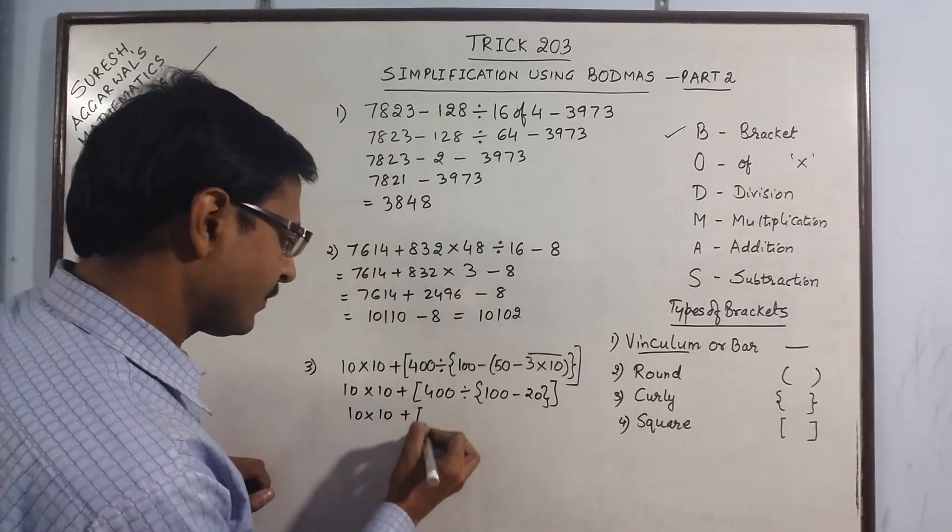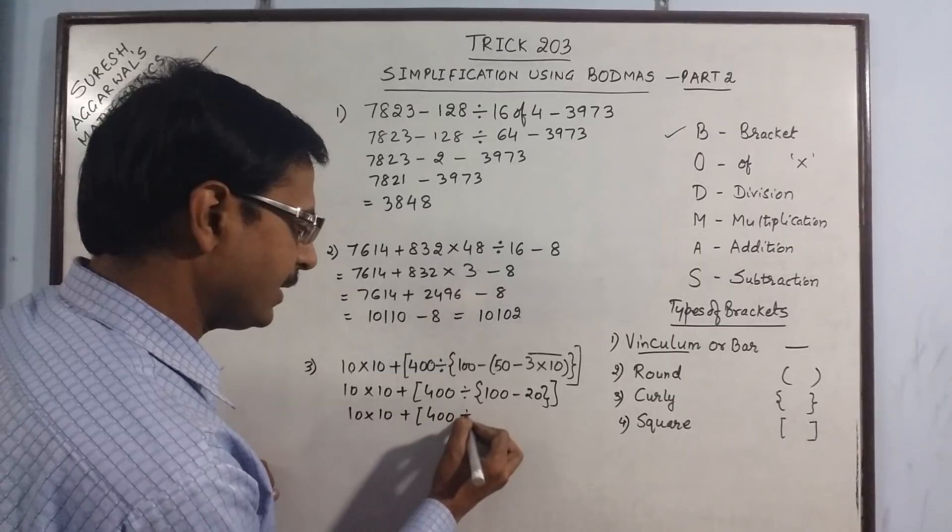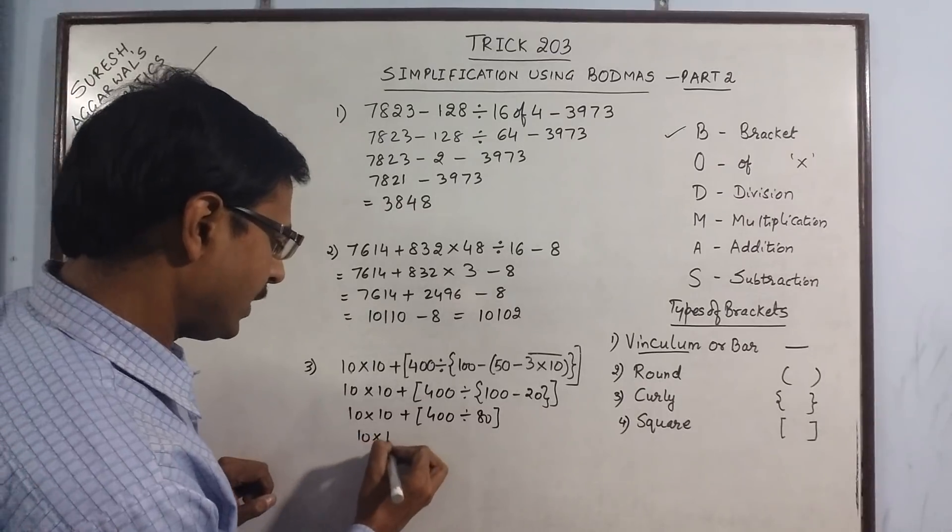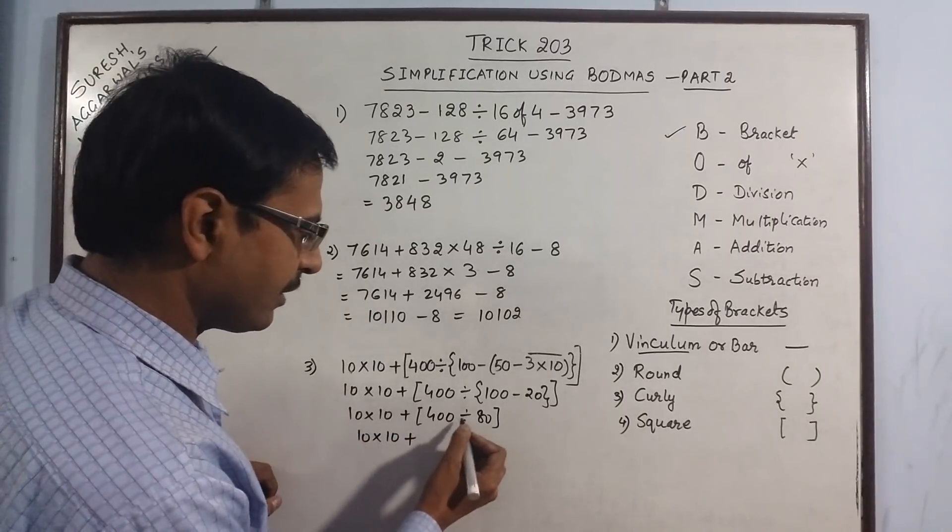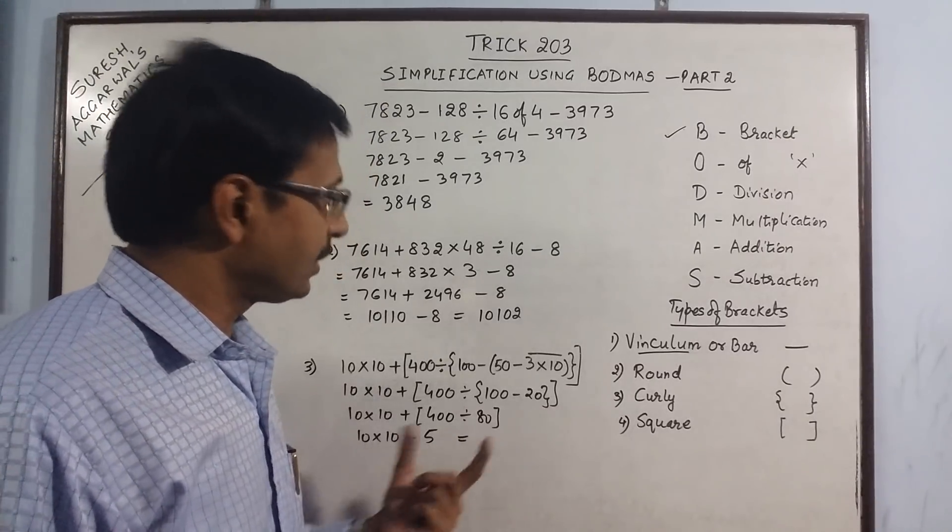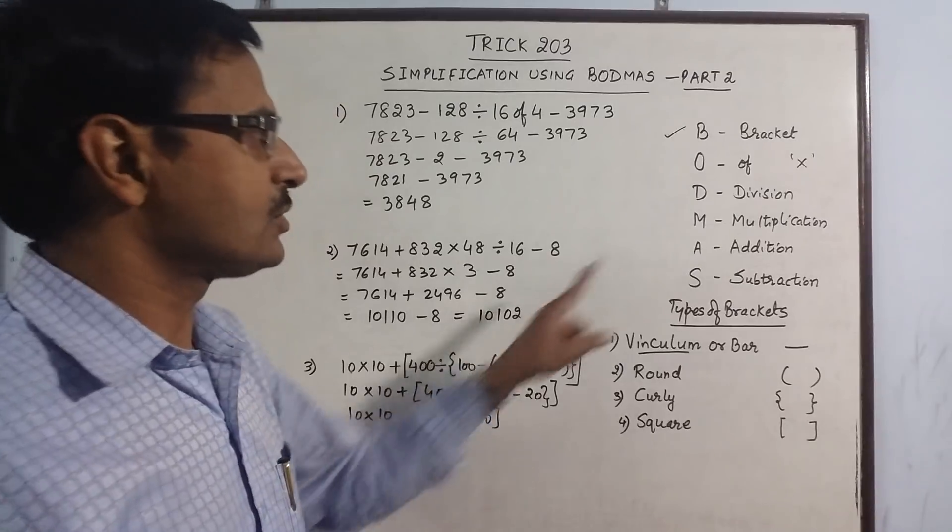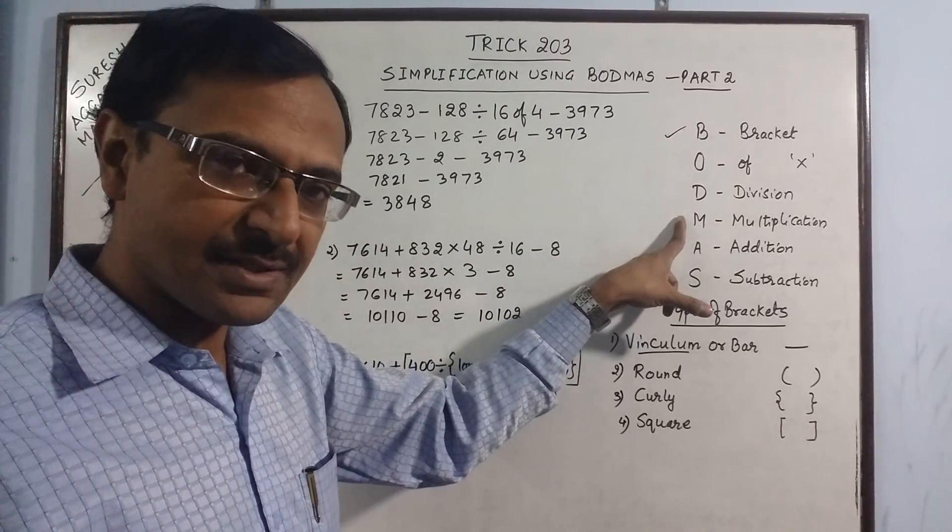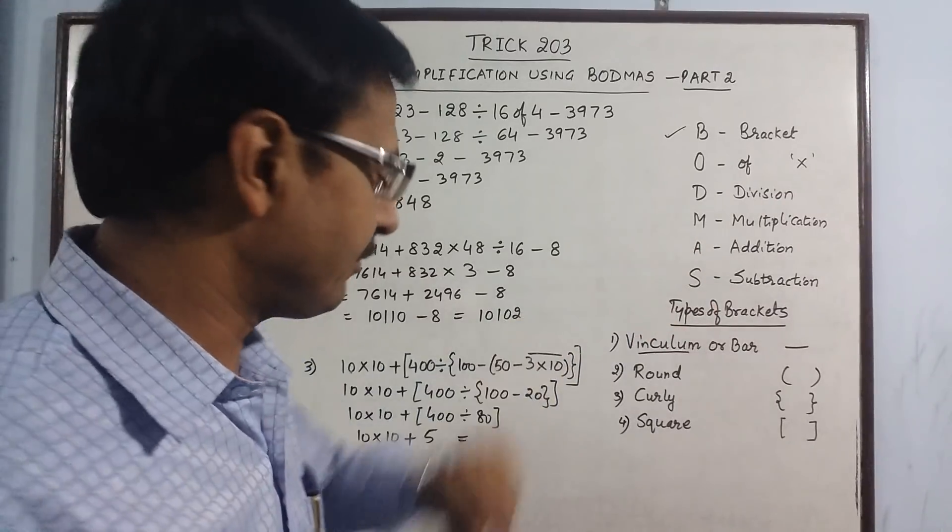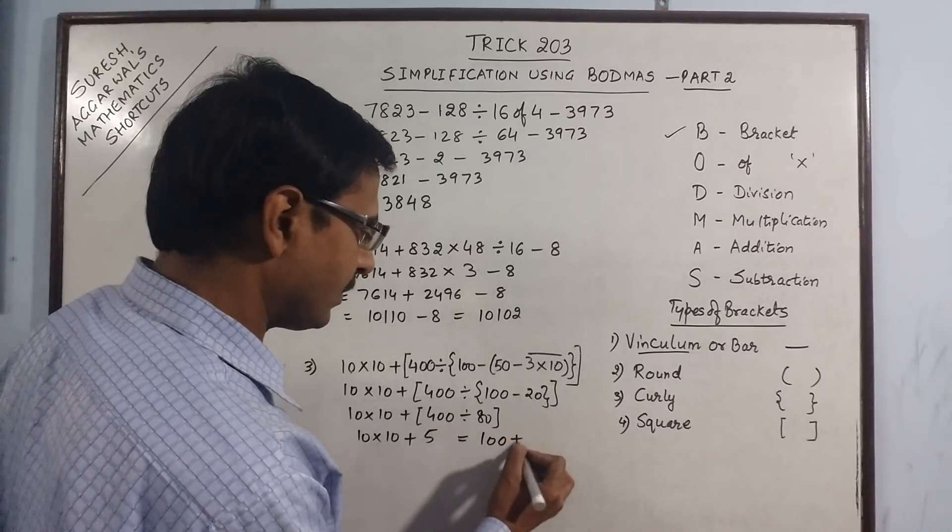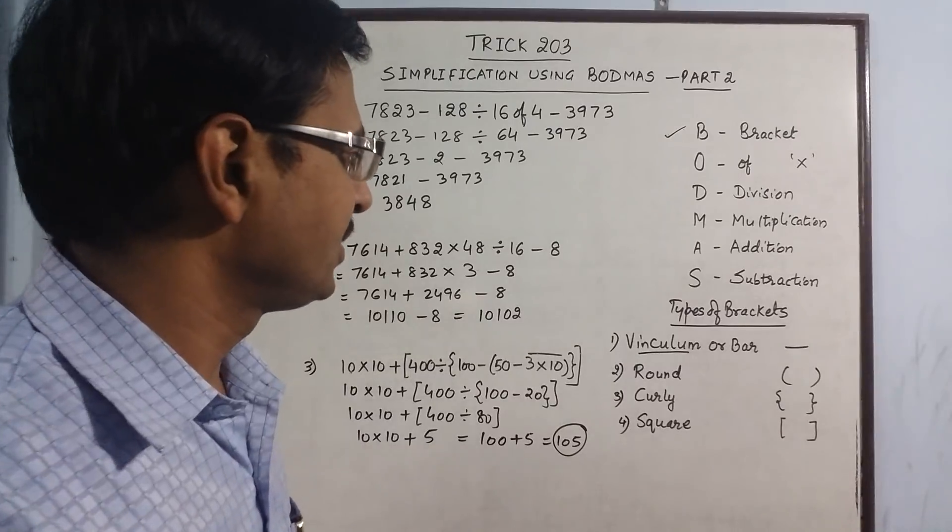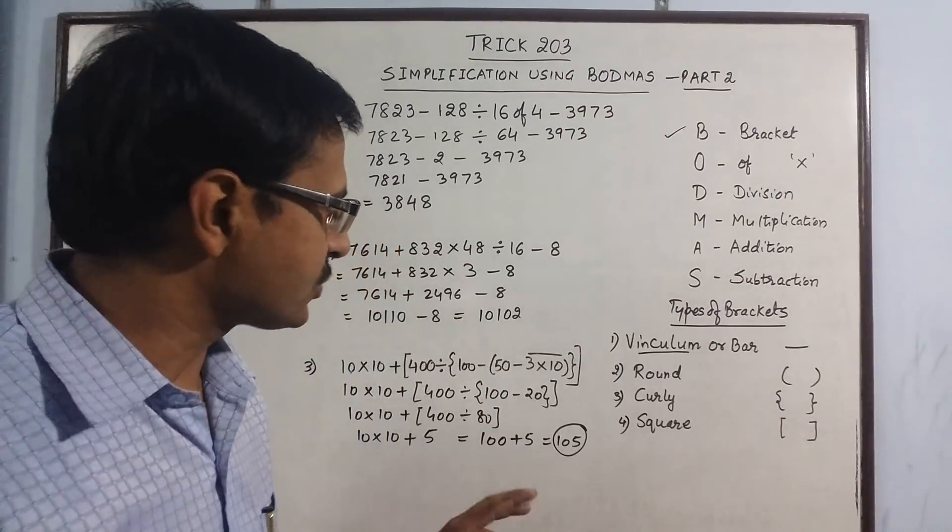Now 10 into 10 plus 400 divided by 80, this is 5. And now we are left with only 2 operations: multiply and add. Multiply assigns more priority over addition, so we have to multiply first. 10 into 10 gives us 100, and plus 5, final addition we get 105 as the answer.